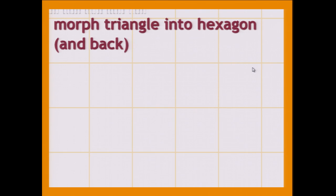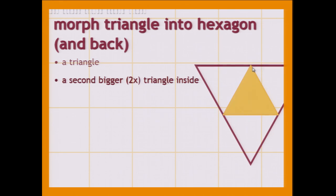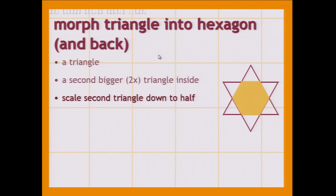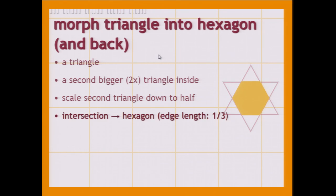So moving further, we can do something more interesting — like morph a triangle into a hexagon. So we start with a triangle, and then we have a second bigger triangle. You're thinking — inside? Well, inside, I mean inside thinking DOM-wise, because the big triangle is going to be a descendant of the smaller triangle. And we scale the second triangle down to half, and their intersection is a hexagon. And you can see that the edge length of this regular hexagon is going to be one-third of the triangle.